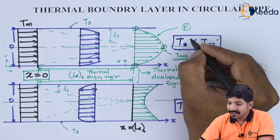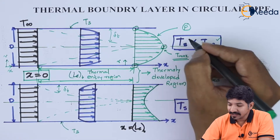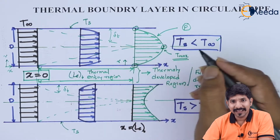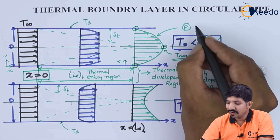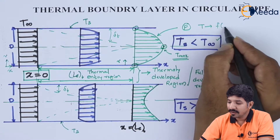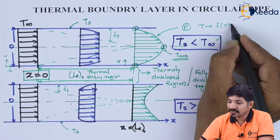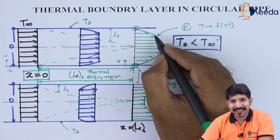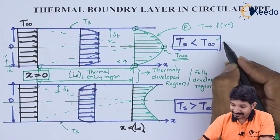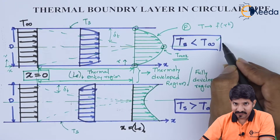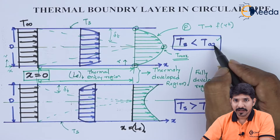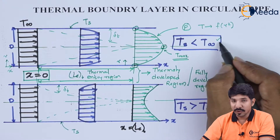Why is the profile parabolic? Because the relationship between temperature and radius is parabolic — temperature is a function of r squared. Hence, there is a parabolic nature. This concludes the first case where the surface temperature is less than the fluid temperature.